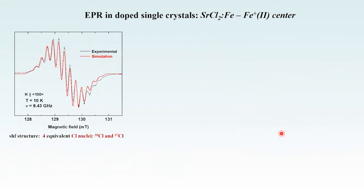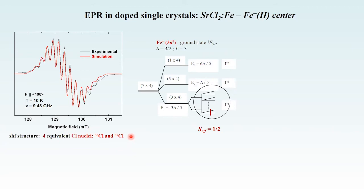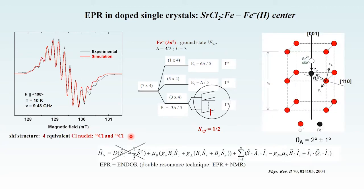For this center, we have also observed a super-hyperfine structure which was simulated by considering only four equivalent chlorine nuclei. This is consistent with a square planar tetragonal symmetry, leading to an effective spin of 1/2. This EPR result was also validated by ENDOR, which resulted in this structural model.